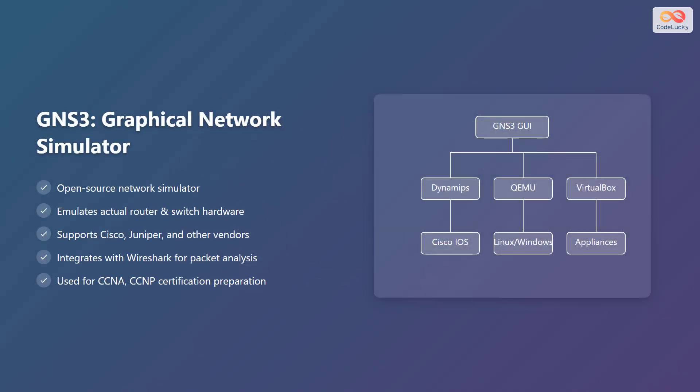GNS3, or Graphical Network Simulator, is an open-source network simulator. It emulates actual router and switch hardware and supports multiple vendors like Cisco and Juniper. GNS3 integrates with Wireshark for packet analysis and is widely used for certifications like CCNA and CCNP.